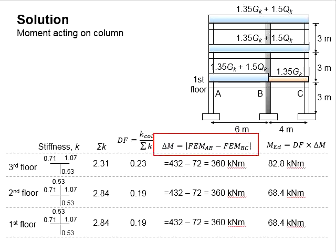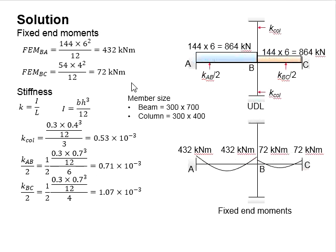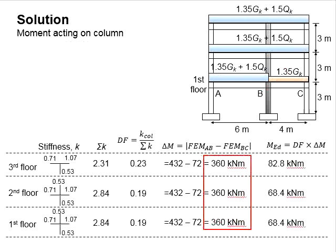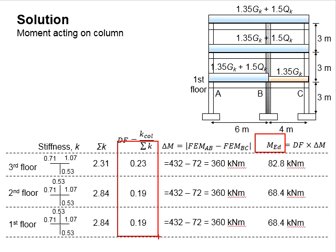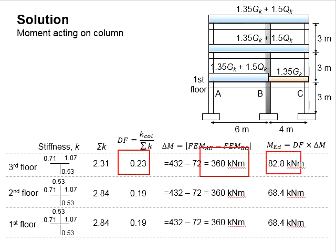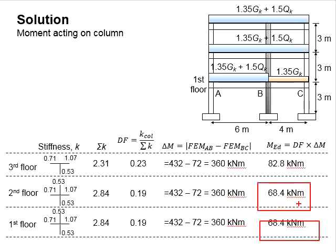Next, from the fixed end moment A, B and B, C, we determine the differences between the moment. The differences between the moment here will be equal to 360. The moment carried by the column is quantified by the percentage as indicated by the distribution factor. With that, the distribution factor is to be multiplied with the delta M, you obtain 82.8, while 0.19 multiplied with 360, you get 68.4. The moment acting on the first floor and second floor will be the same.